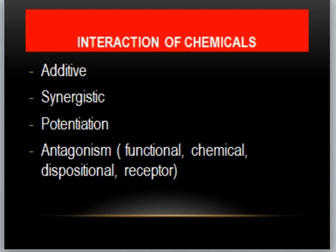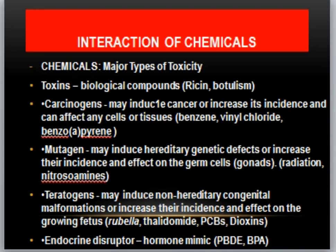The interactions are types and chemicals. We have discussed the teratogens. Teratogens are substances which induce non-hereditary congenital malformations and increase the incidence and effects on the growing fetus. The teratogenic effects may be cleft palate, defective limb, brain retardation, or neural tube defects.